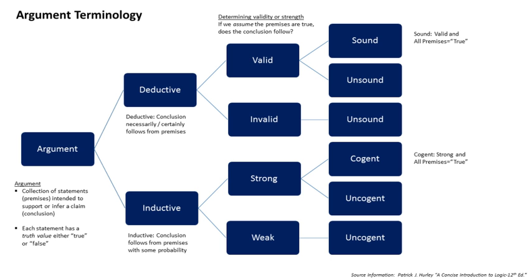There are several kinds of arguments in logic, the best known of which are deductive and inductive. An argument has one or more premises but only one conclusion. Each premise and the conclusion are truth-bearers or truth candidates, each capable of being either true or false but not both. These truth values bear on the terminology used with arguments.